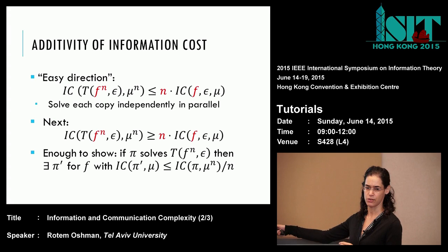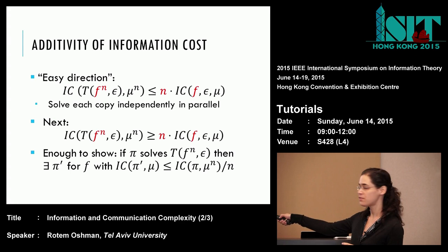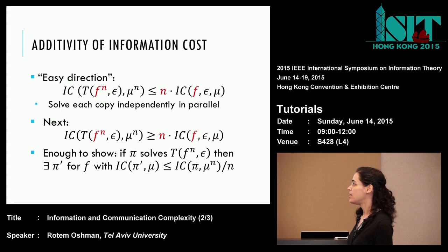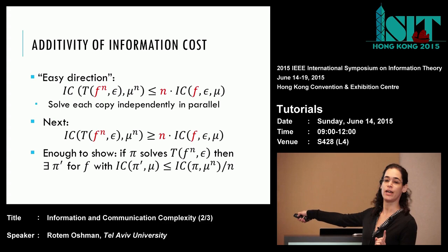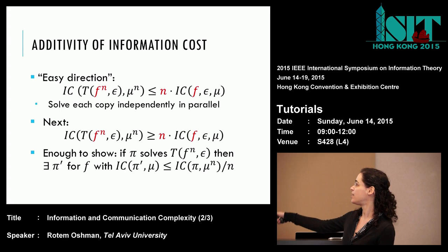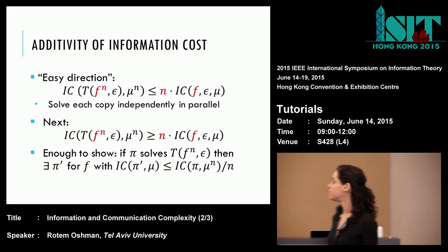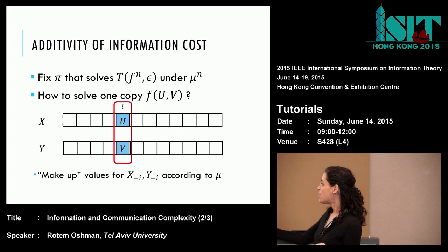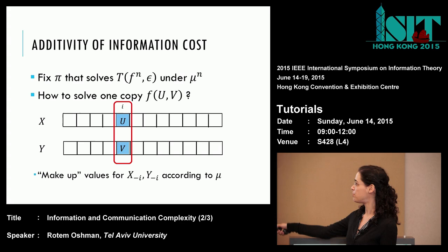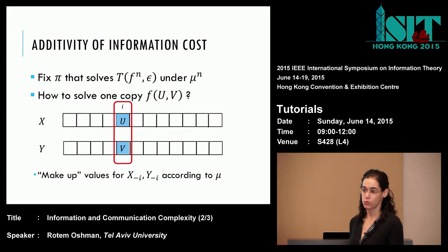Remember that information cost is an infimum over protocols on both sides. To show this inequality, we need to show that if we can solve the n-fold task with some information cost, then we can solve the single copy with 1/n the information cost. If we show this for every protocol, we get the inequality for the infimums. So: given a protocol for the n-fold task, I want to construct from it a protocol for a single copy. The protocol wants to run on n copies, but I only have one input I care about.